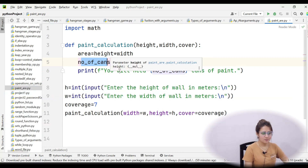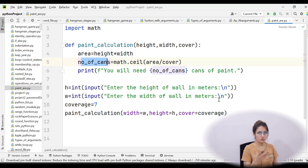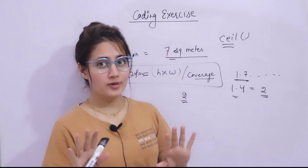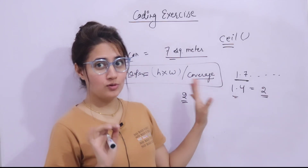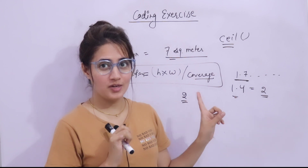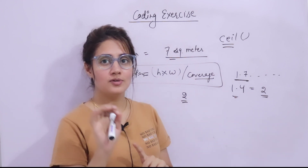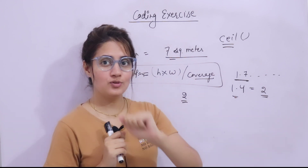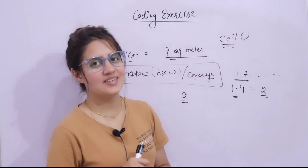That's it — this is how you can calculate the number of paint cans needed to paint a wall. I hope this was not too tough for you. In the next video we'll see one more coding exercise. See you in the next video, bye bye, take care.